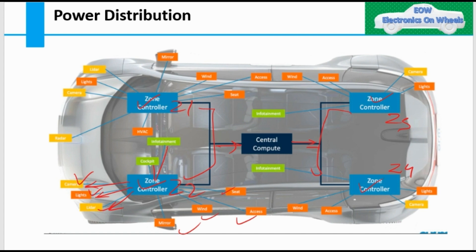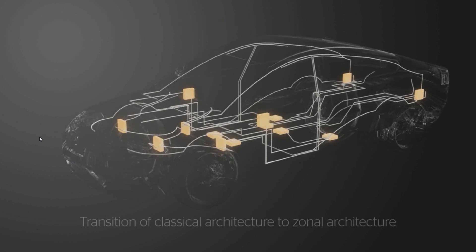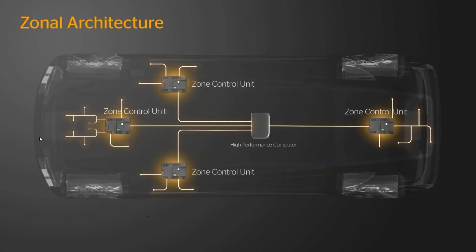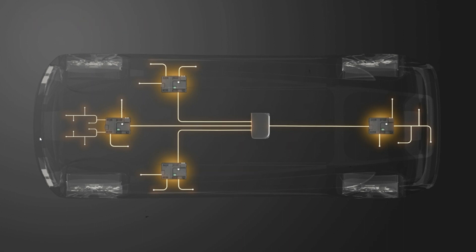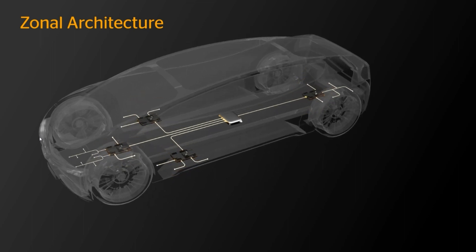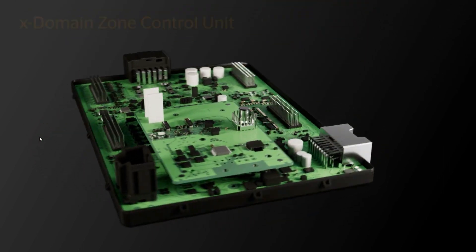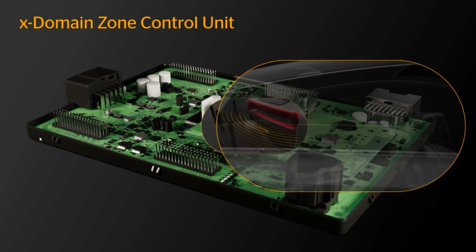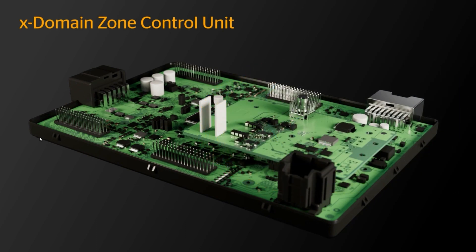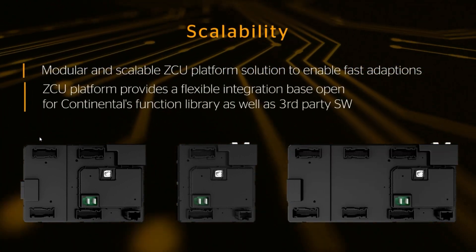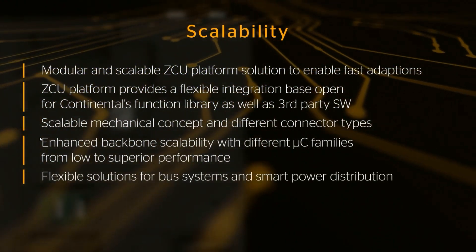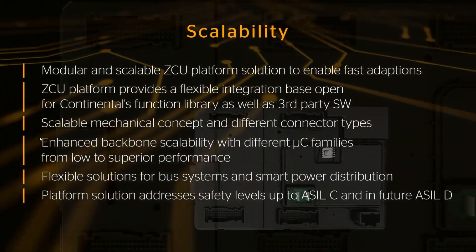To summarize: three power distribution generations exist. Generation one has centralized power distribution with one secondary fuse supplying the whole vehicle. Generation two divides the secondary fuse box into different locations similar to zonal controllers, though managing physical fuses and relays is challenging and there are risks of fire accidents. In the zonal architecture, fuses and relays are integrated as semiconductor fuses and relays, providing more control, more reliability, and more feasibility.